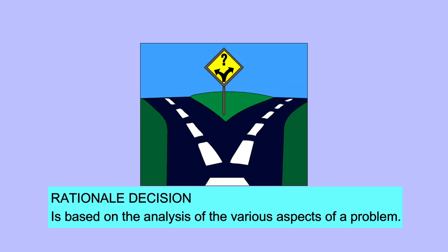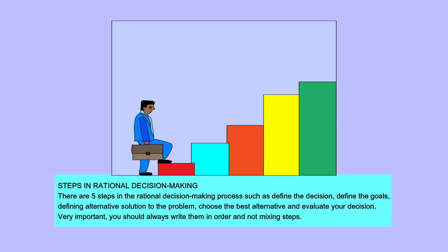A rational decision is based on the analysis of the various aspects of a problem. There are five steps in the rational decision making process: define the decision, define the goals, define alternative solutions to the problem, choose the best alternative, and evaluate your decision. Always write them in order and do not mix the steps.